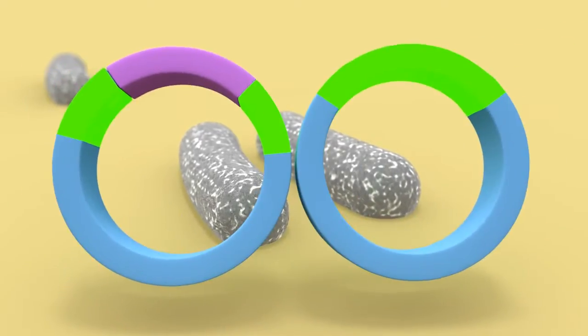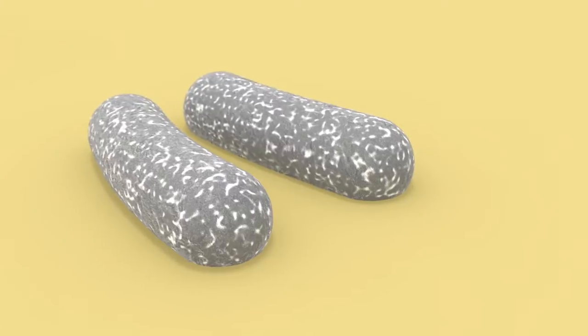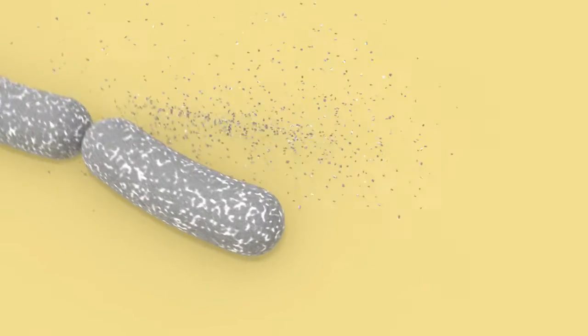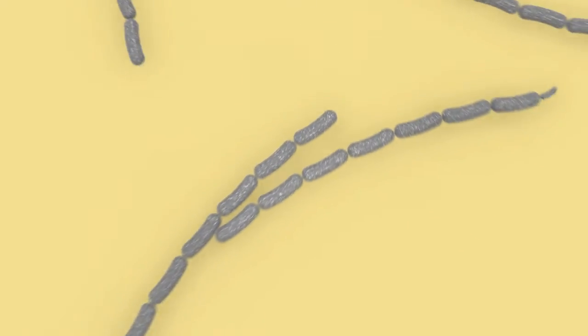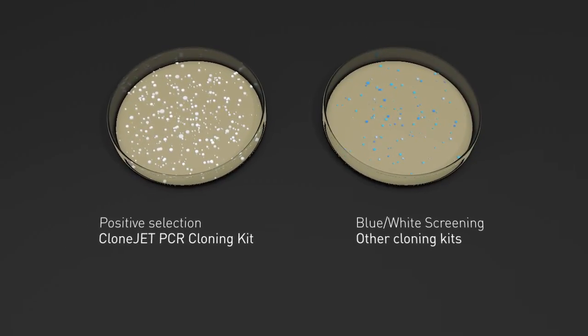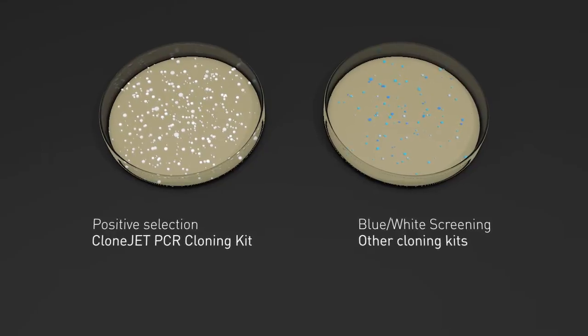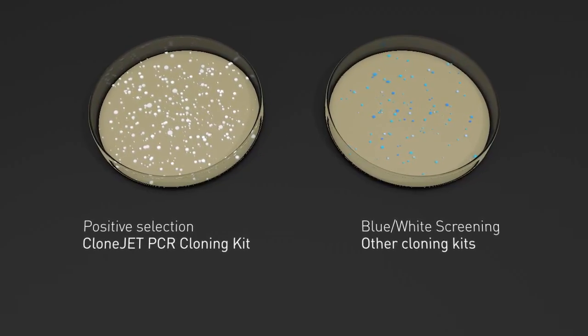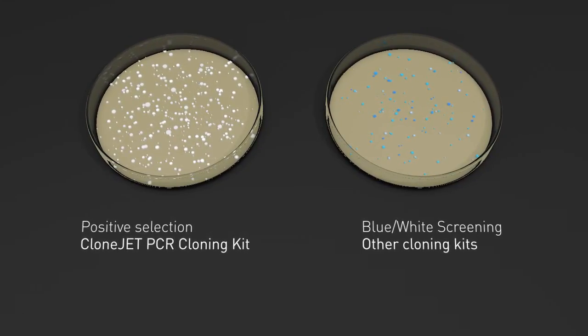As a result, when the ligation products are transformed into E. coli, only the cells with the recombinant plasmid will appear on culture plates. Cells without DNA inserts express the lethal gene, causing cell death. This approach eliminates the need for expensive and hard to decipher blue-white screening required in other cloning systems.